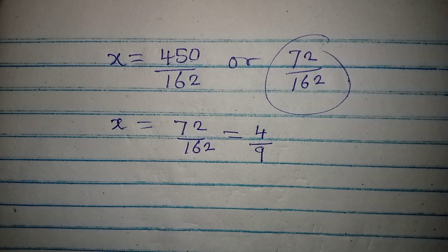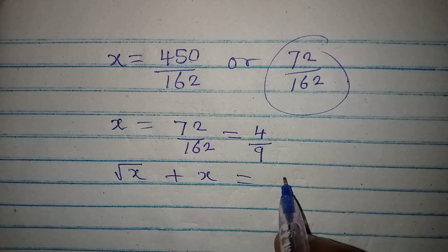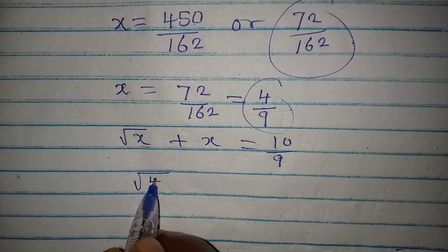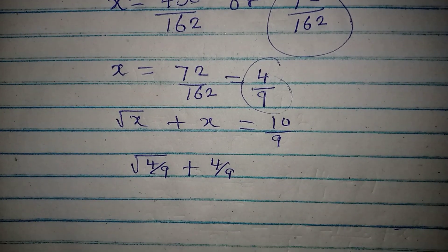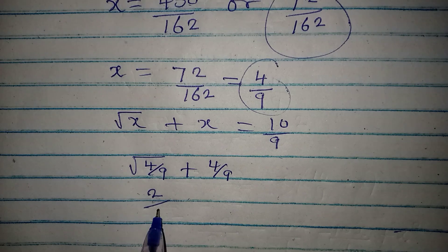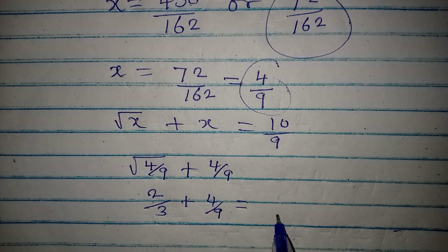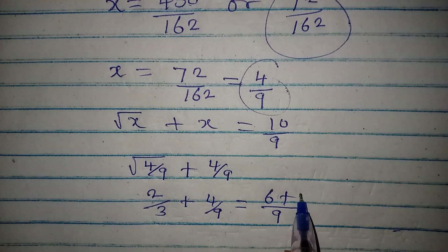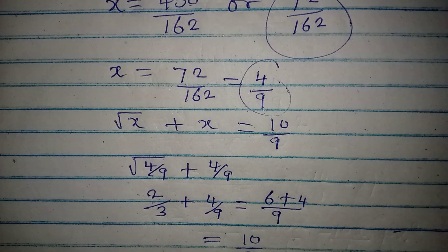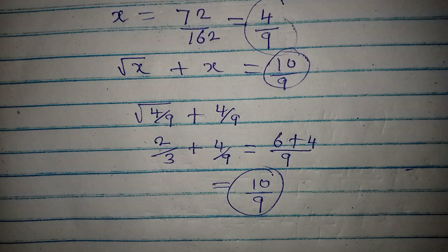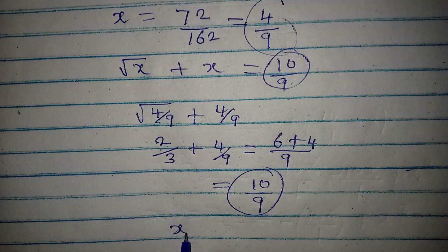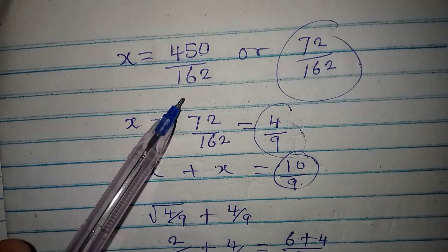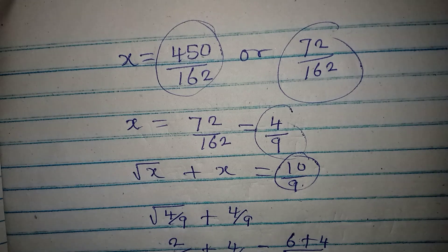Recalling the original equation, square root of x plus x equals 10 over 9, let's verify by substituting x equals 4 over 9. We get square root of 4 over 9, plus 4 over 9, which is 2 over 3 plus 4 over 9. The LCM is 9: 9 divided by 3 times 2 is 6, plus 4 gives 10 over 9. This matches the right-hand side, confirming x equals 4 over 9. The first value, 450 over 162, does not satisfy. Thank you for watching.